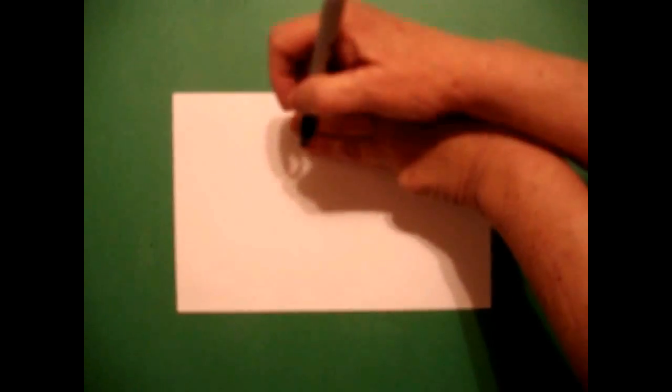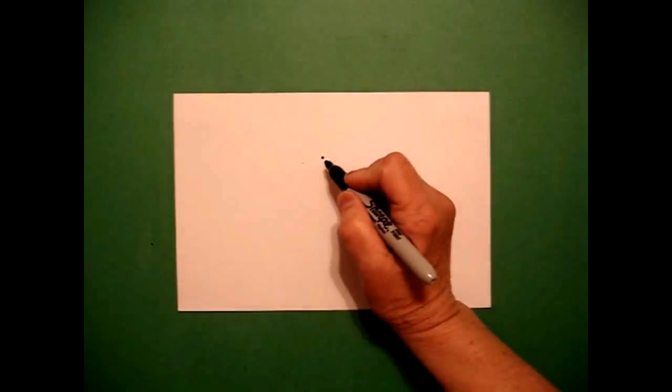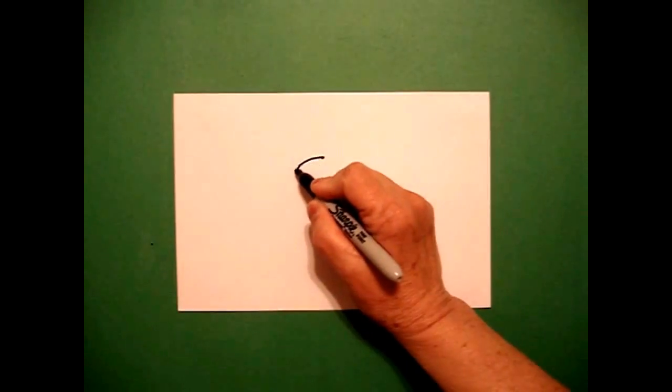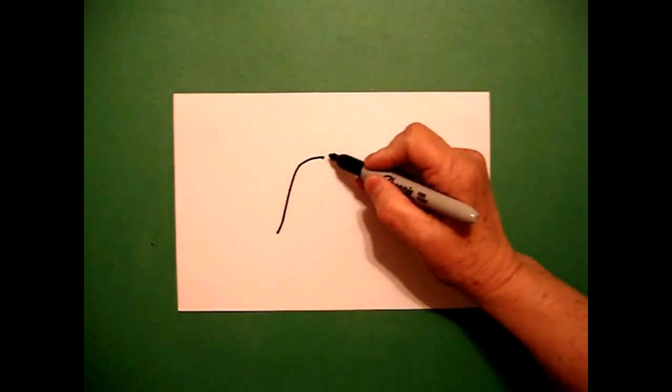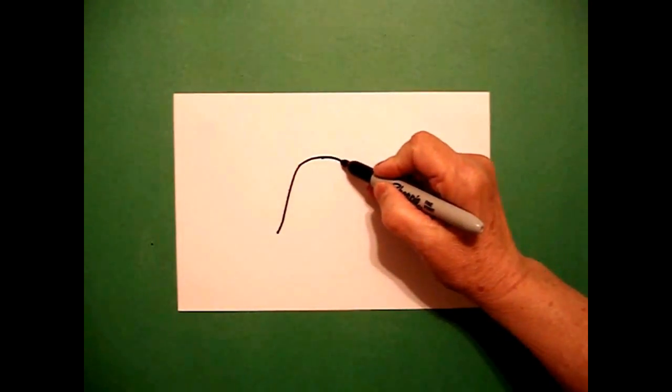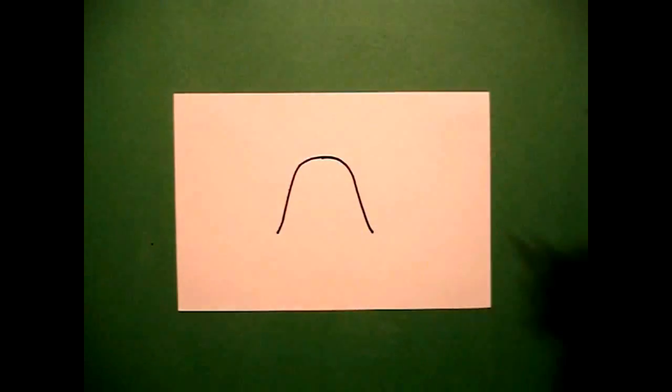I'm going to take three fingers in the center and put a dot. And from that dot, I'm going to draw a curved line down on the left, go back to the dot, and a curved line down on the right.